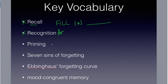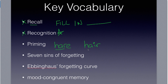Moving on to priming. Priming is the activation of our memories and is usually unconscious. The example the book gives is: you see a picture of a rabbit and then you're later asked to spell the word 'hair' — you're going to spell it H-A-R-E. If I showed you a car and asked for an example of an automobile, you'd say car, or if I showed you a motorcycle and asked for a vehicle, you might say motorcycle because you were primed.